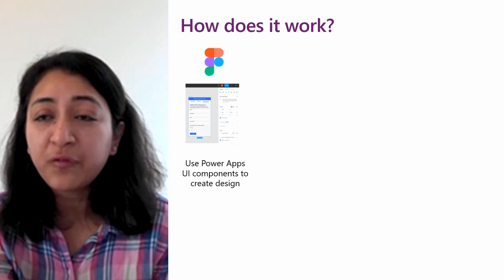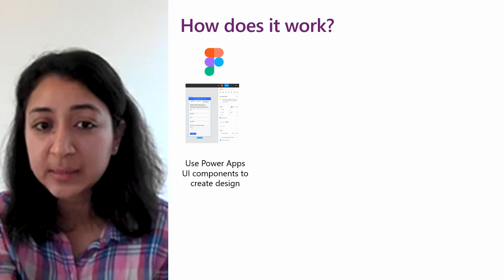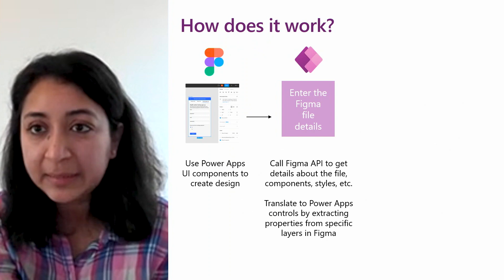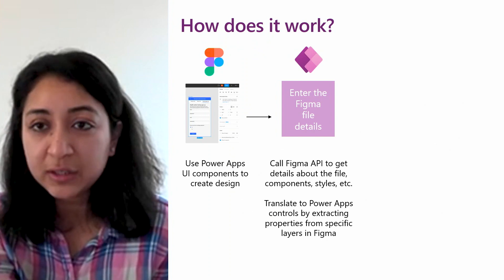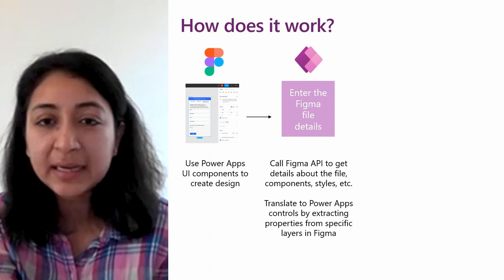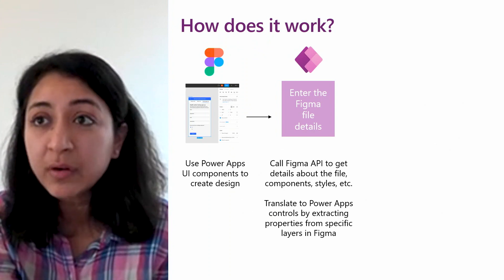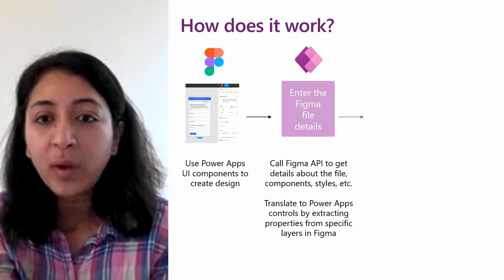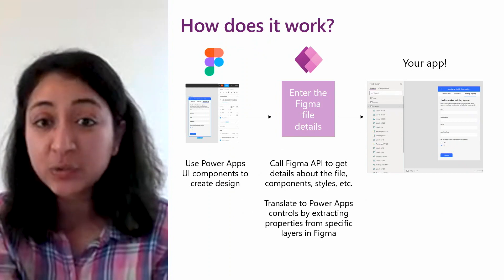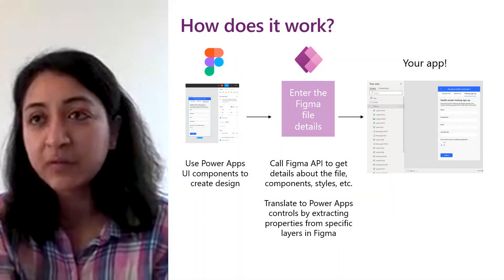Let's look at how it all works. First, as a designer, you go to Figma and use the Power Apps UI component toolkit to create your designs. Then, as a designer or developer, you simply enter the Figma file details — the file name and other important details — and upload that Figma file to Power Apps. We call the Figma API in the background to understand the styling and details of the file. Since we use Power Apps UI components, we understand what those components mean in Power Apps and are able to do a one-to-one mapping. Once you hit Create, we create a working app that looks exactly like the one you designed in Figma — a huge productivity saver for both designers and developers.